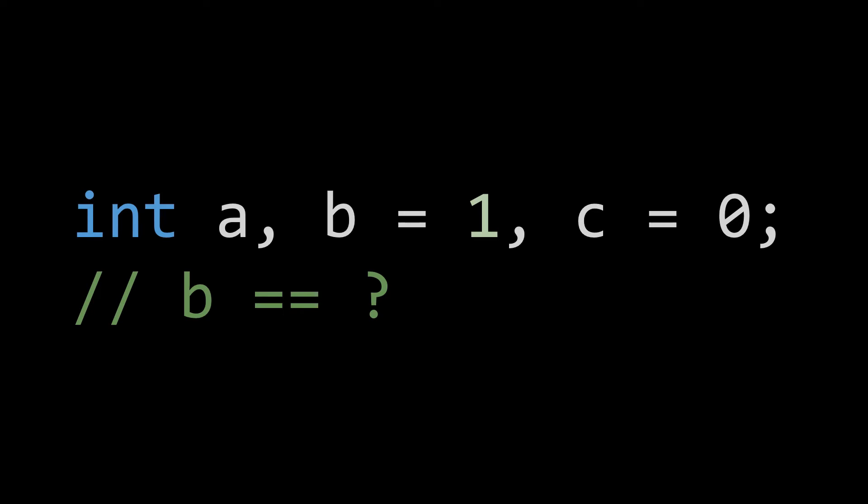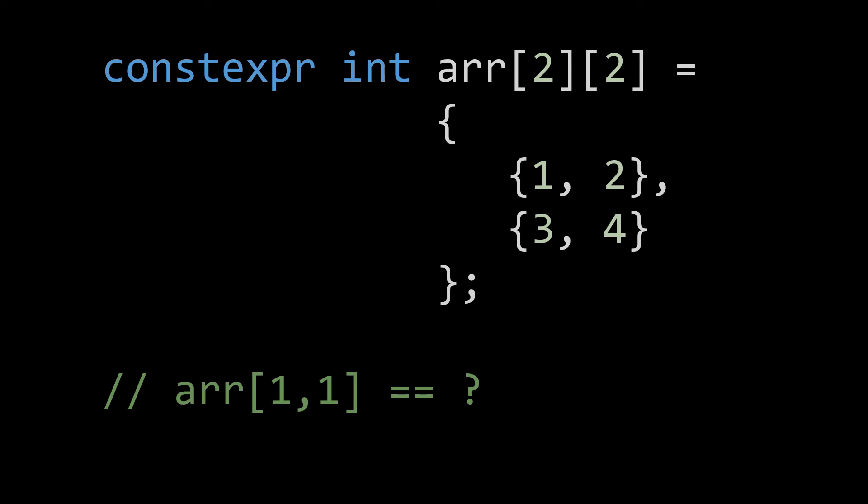Let's take a look at another example. What about this? It is a simple 2D array. Indexing into this array should be easy. Well, if you're coming from a language like C sharp, you'll be disappointed.